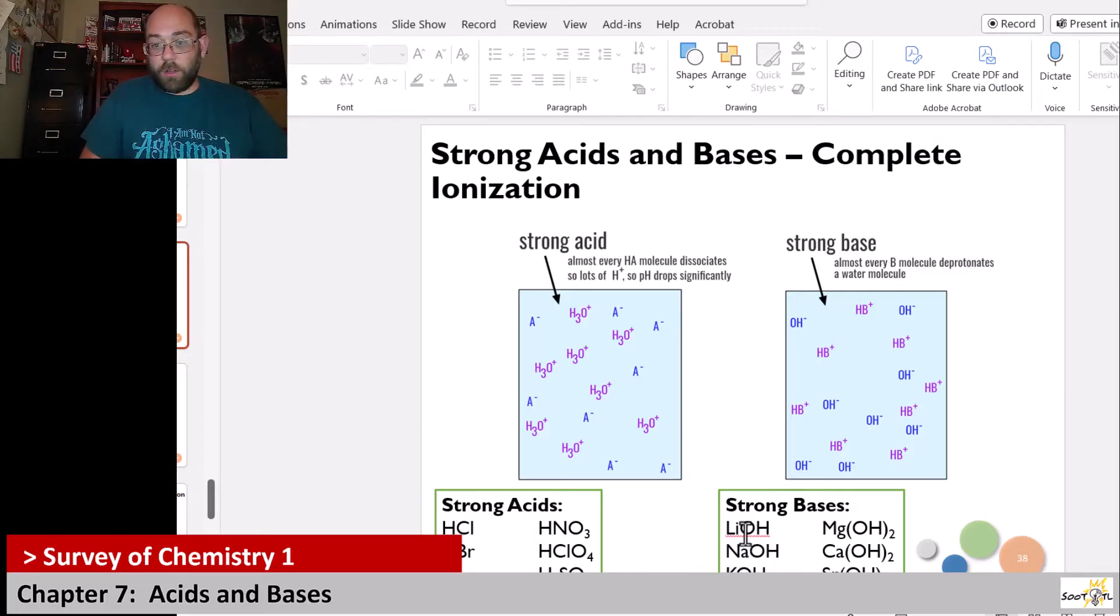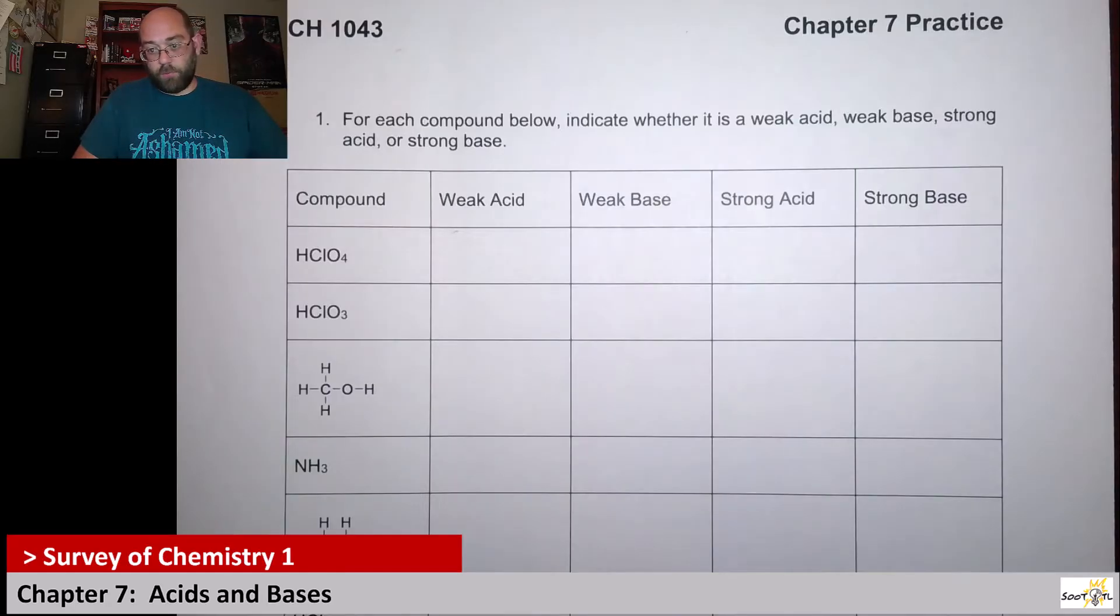Strong bases all have the hydroxide polyatomic ion with them. You got lithium, sodium, potassium—those are your group 1A metals. And then you also have magnesium, calcium, strontium—those group 2A metals. All of those are your strong bases. Any other hydroxide is automatically understood to be a weak base. Let's run through this and figure out our options.